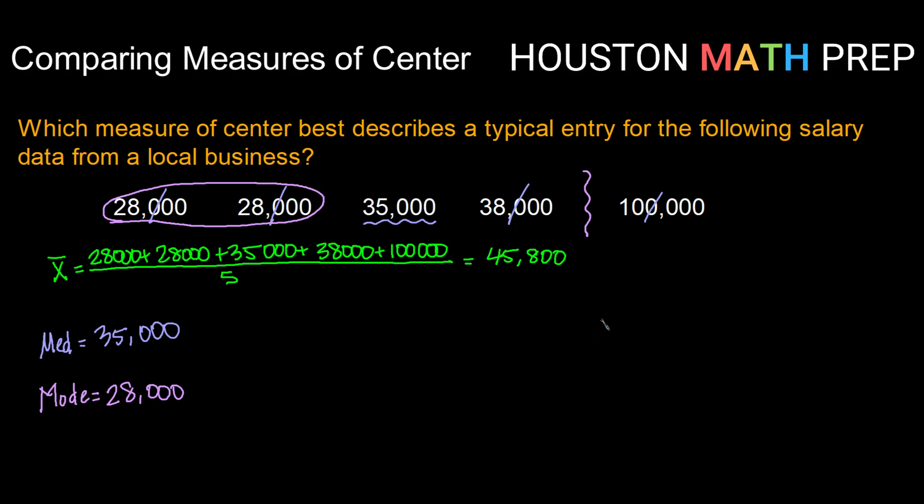So that means four out of the five data values that we have are below that, and one is significantly above that. So really, what has happened here is this very large salary of $100,000 has pulled that mean up higher than a typical center value. So the mean here really isn't very descriptive.